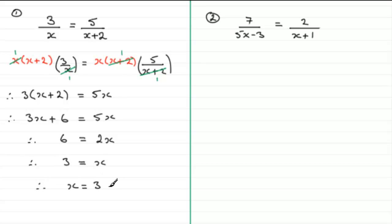Okay? Now, you might like to have a go at this one. 7 divided by 5x minus 3 equals 2 divided by x plus 1. I'll just give you a moment if you'd like to have a go to pause the video. Come back when ready and you can check your work solution with mine. Okay. Welcome back then, if you had a go.